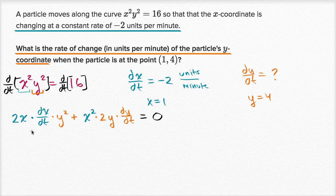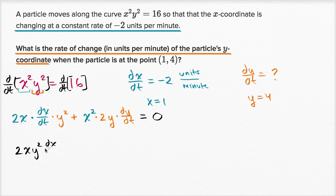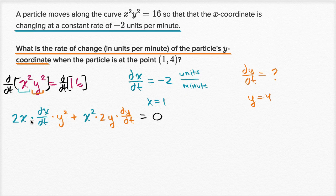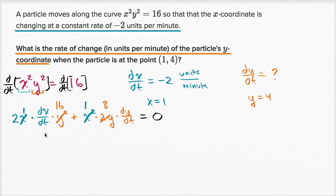So here we have an equation giving a relationship between x, dx/dt, y, and dy/dt. All we're trying to do is solve for dy/dt, so let's substitute the values in. We know x equals one, so x squared equals one. We know y equals four, so y squared is 16, and two y is eight. We know dx/dt is negative two.